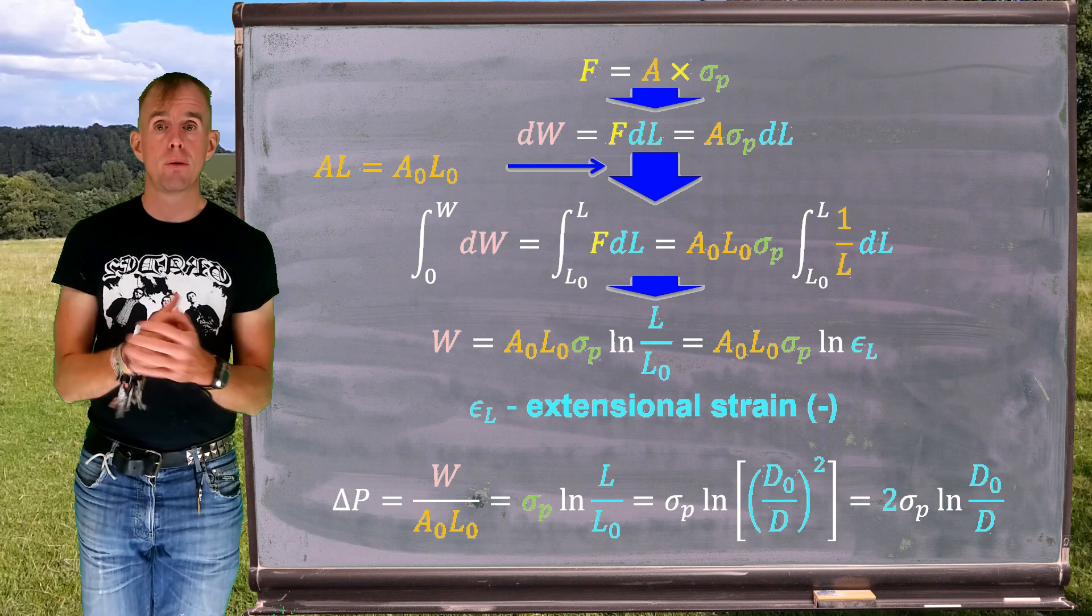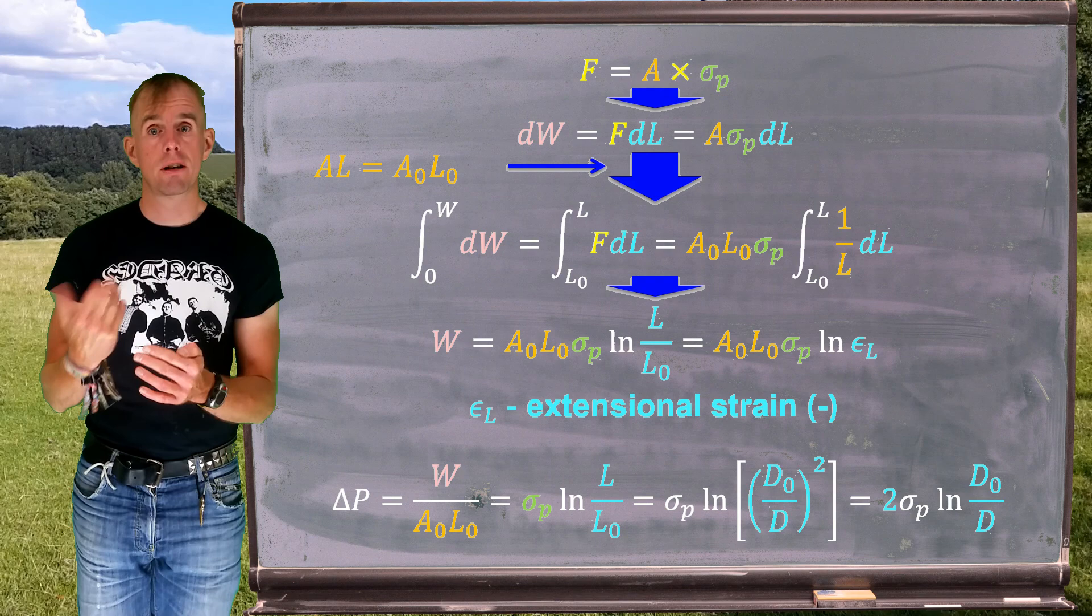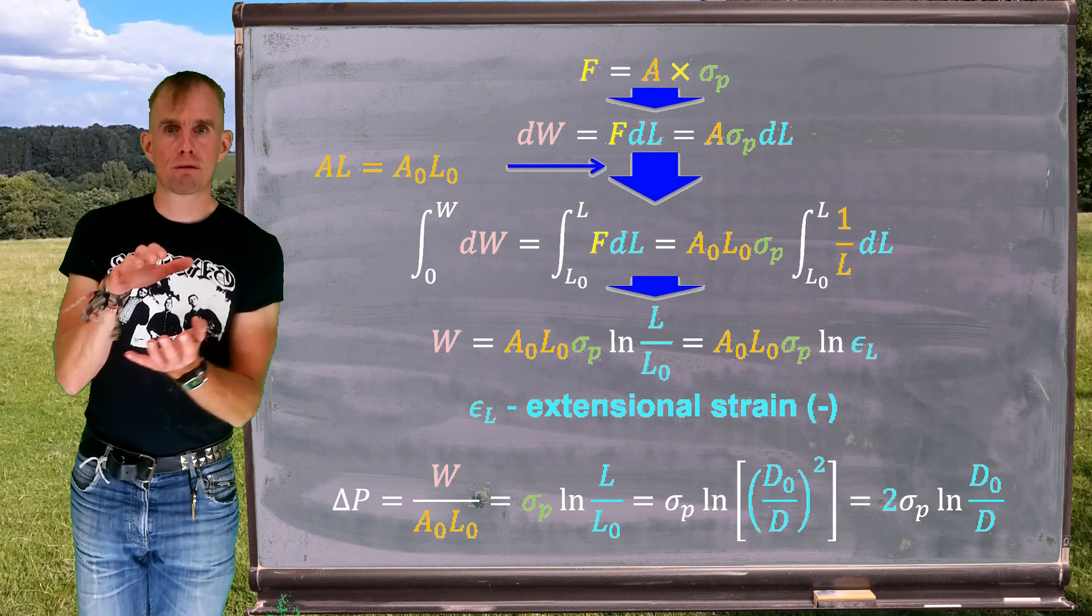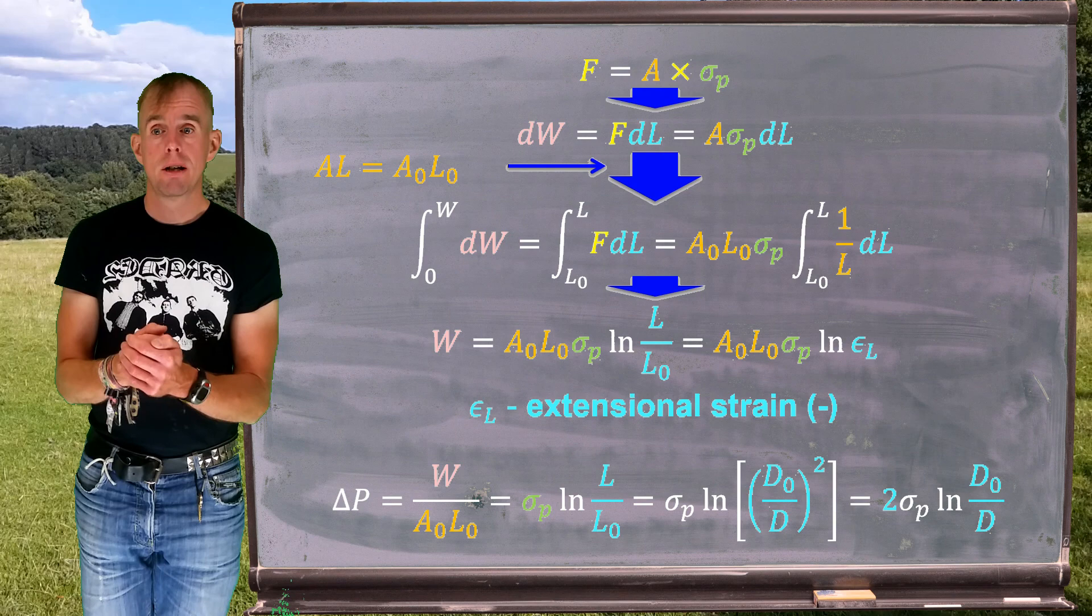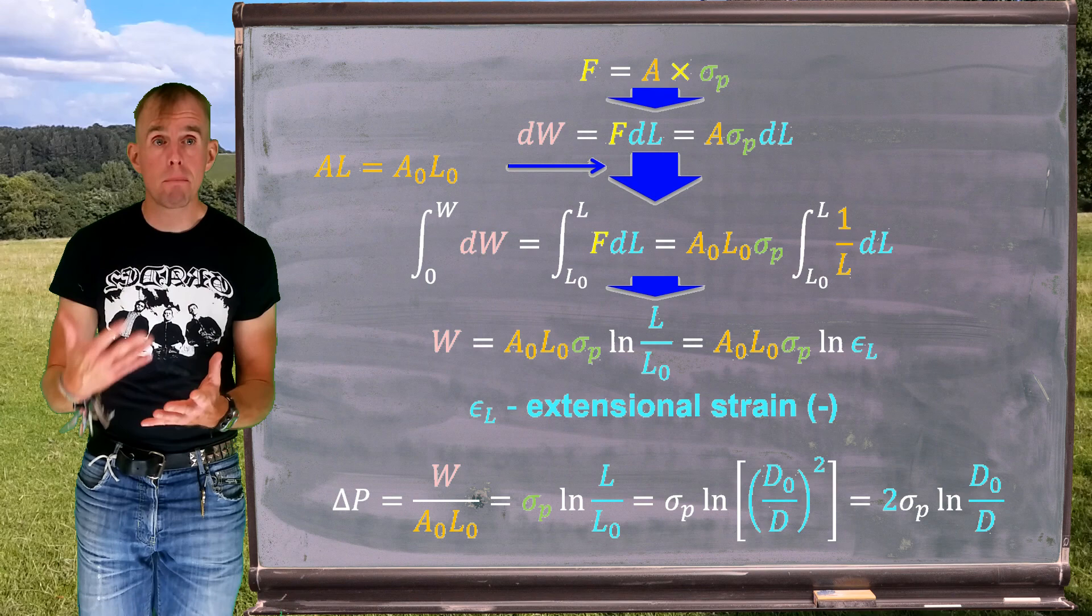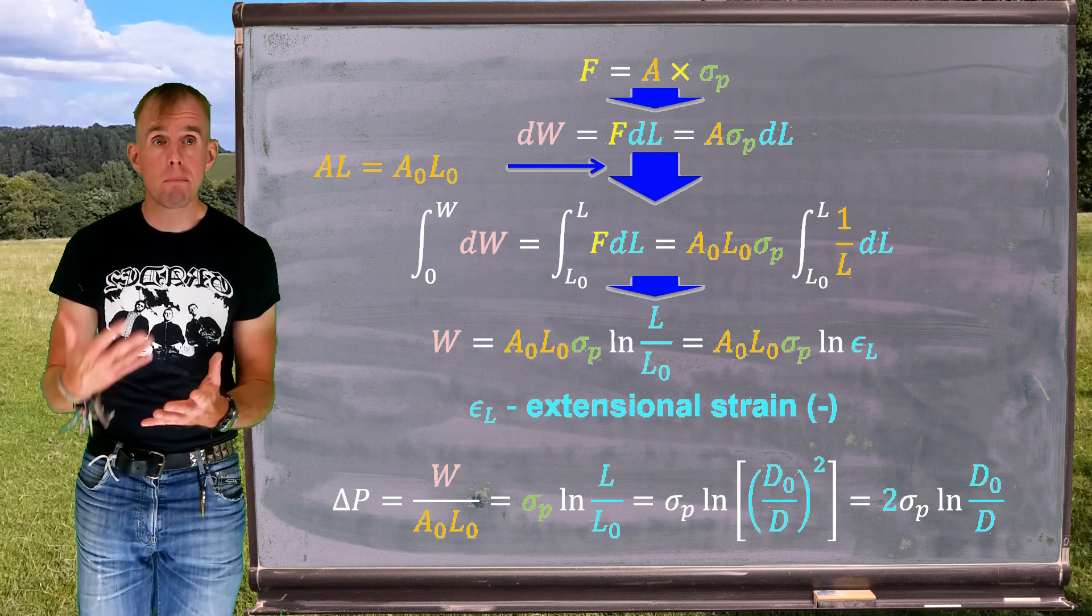We can rewrite this in terms of diameter change rather than length change if you wish, and remembering that volume is conserved and the cross-sectional area is pi d squared over 4, we can say that well L over L0 is going to be d0 squared over d squared. So simply dropping that into the log expression and then removing the power outside the log gives us that the pressure is 2 sigma p log d0 over d, which may be a slightly more convenient expression to use if you're shape forming a certain cross-sectional diameter from an original cross-section diameter.